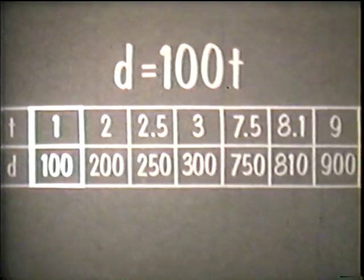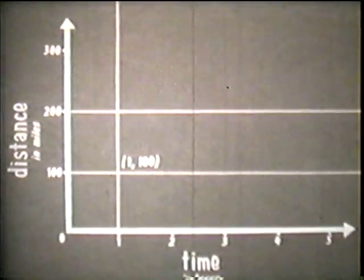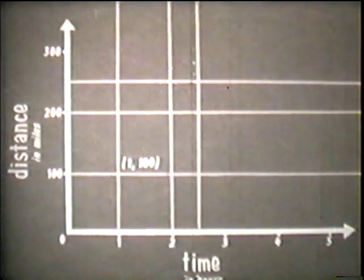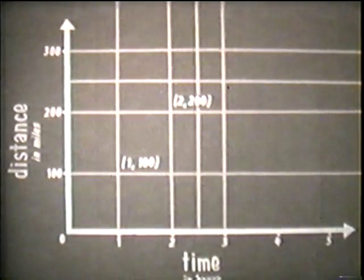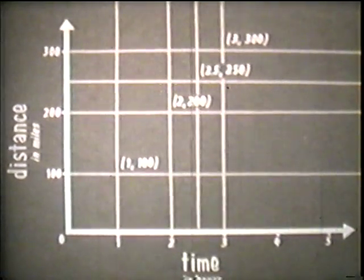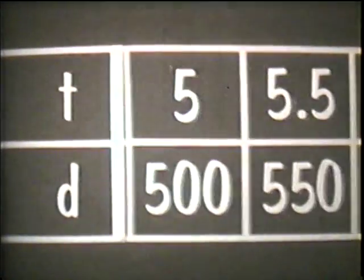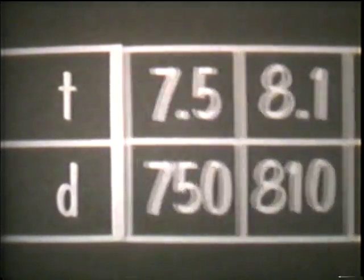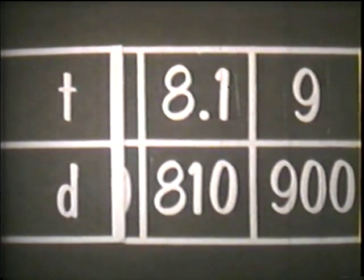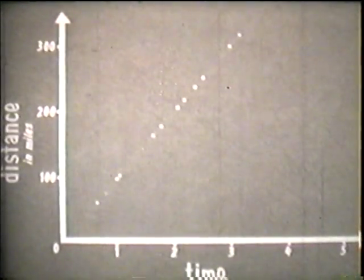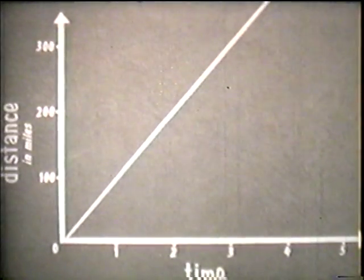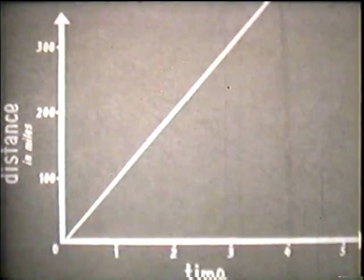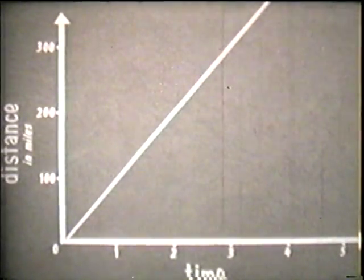In a similar way, we can graph other ordered pairs of numbers with other pairs of perpendicular lines. The points where the lines intersect have coordinates corresponding to the ordered pairs of numbers. In the same way, we can graph many other pairs of numbers that satisfy the relationship between the two variables. This line represents the group or set of all possible ordered pairs of numbers that satisfy the relationship between the two variables in our equation.